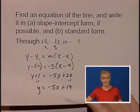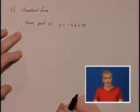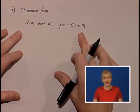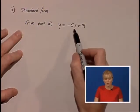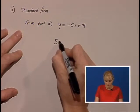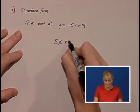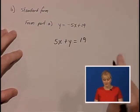We'd like to write this in standard form. From part A, standard form will be if we have both x and y on the same side of the equation. So we're going to add 5x to both sides, and we'll have 5x plus y equals 19.